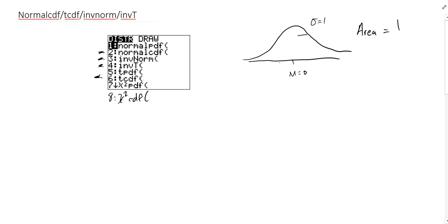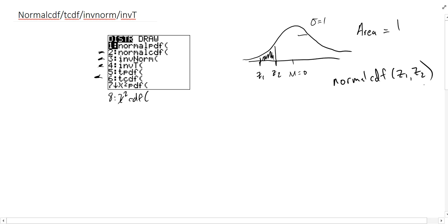What we'll do is look at two z-scores, z1 and z2, and find the area between those two values. That area tells us the proportion of our population between those two values. To find that area, we use normalCDF, starting with the left-hand value: normalCDF(z1, z2).